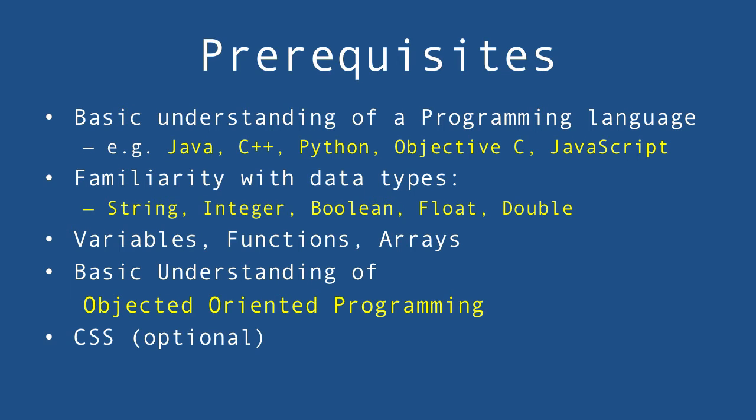In general, you should already be familiar — at least theoretically — with strings, integers, booleans, floats or doubles, which are the basic data types. You should at least know what variables are, what functions are, or what arrays are. Perfect would be if you already have a basic understanding of object-oriented programming, which we'll be using in this course. Optional, but really not necessary, is some knowledge of CSS.